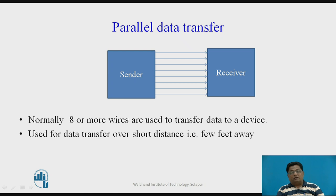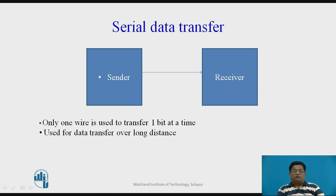Since multiple bits can be transferred simultaneously, parallel data transfer is faster. In serial data transfer, only one wire is sufficient to transmit data between transmitter and receiver, and only one bit is transferred at a time. Serial data transfer is mainly preferred for transferring data over long distances, but it is slower compared to parallel data transfer.